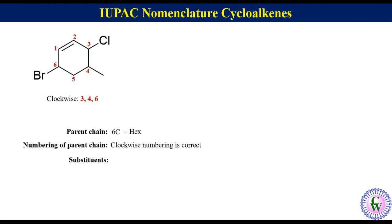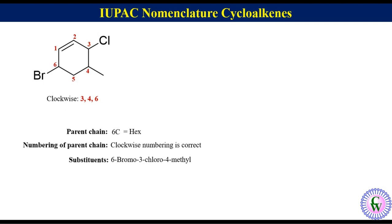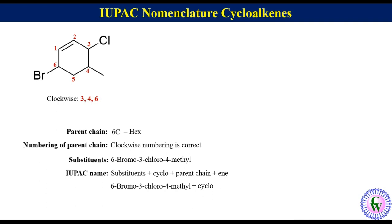There are 3 substituents: a bromo at C6, a chloro at C3, and a methyl at C4, so the substituents will be written as 6-bromo-3-chloro-4-methyl. Merging: 6-bromo-3-chloro-4-methyl + cyclo + hex + ene. So the IUPAC name of this molecule will be 6-bromo-3-chloro-4-methylcyclohexene.